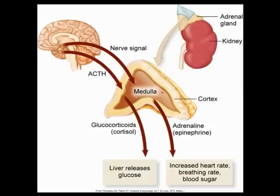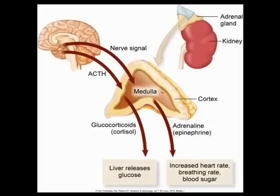This slide illustrates the alarm response. A stimulus signals the brain, which then sends a nerve impulse and ACTH down to the adrenal medulla, stimulating the production of epinephrine and cortisol. This releases glucose from the liver and increases heart rate, breathing rate, blood sugar, and blood pressure — all in an attempt to make those resources available for fight or flight. We need more cardiac output, more glucose, and more oxygen getting to the tissues.